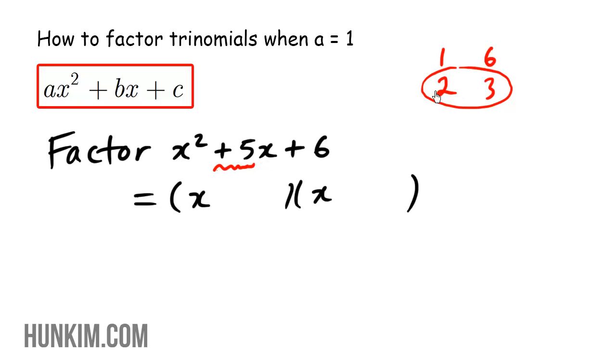In fact, we can just finalize the actual signs here. Positive two times positive three becomes positive six, correct? And positive two, positive three adds up to be positive five. So this here are the correct numbers we're going to be using. So we have positive two and positive three as the correct numbers.